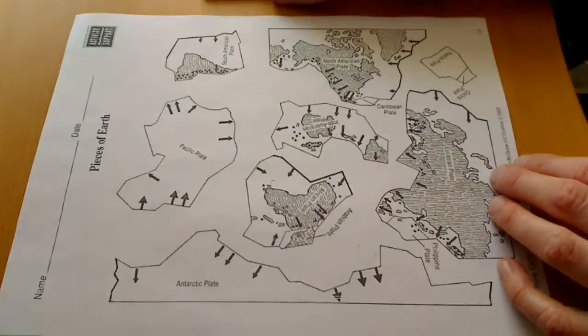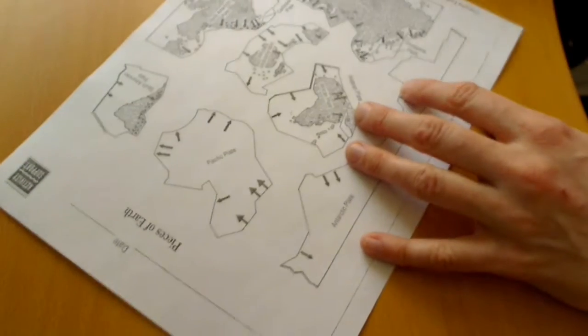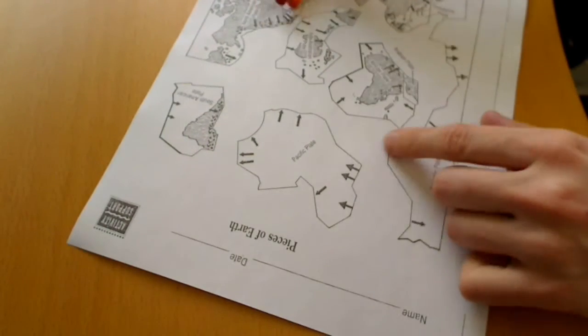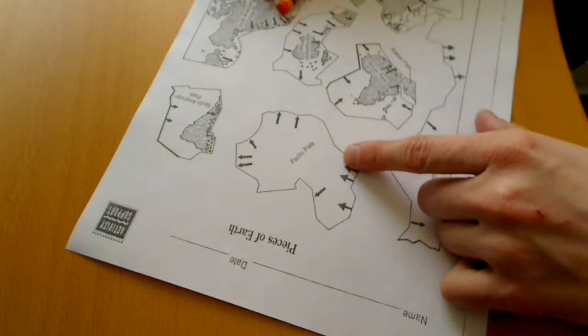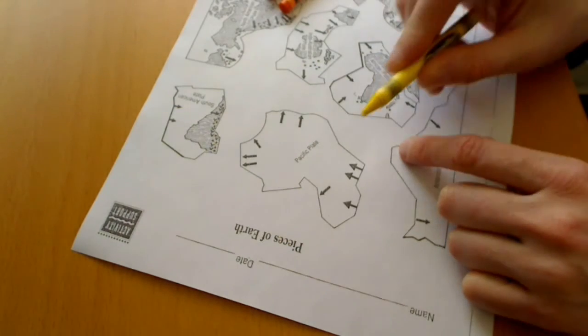Okay, to begin with, the first plate that we're going to be coloring in is the Pacific plate. I'm going to be turning this paper all around as we're working on this. The Pacific plate is the one that is completely oceanic crust. There is no continental crust here. We're going to be coloring it in yellow.